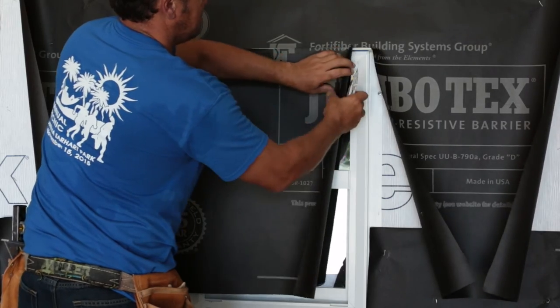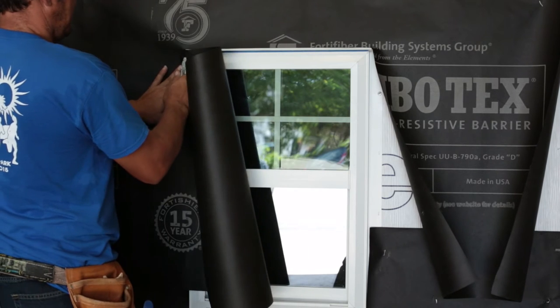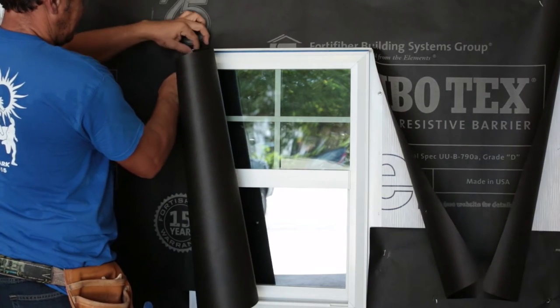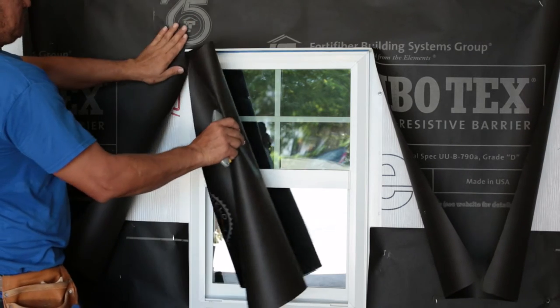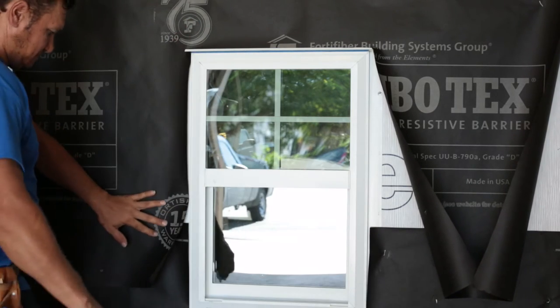Here, the installer is applying the weather-resistive barrier, which is cut using the window as a template. Once cut, the weather-resistive barrier is then attached to the wall surrounding the window.